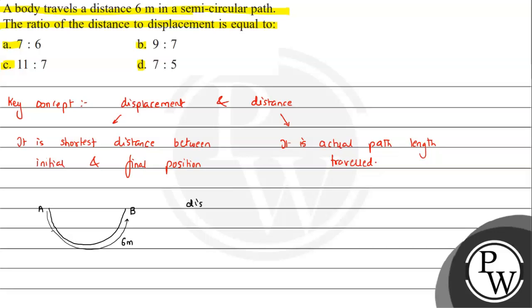So the distance has been given as 6 meters. And 6 meters precisely is a semicircular arc. The whole circle's circumference is 2πr. So the semicircular path will be πr. So the distance is basically this.